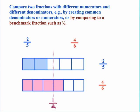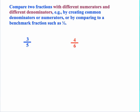We find where 1 half is, which is easier to do with 4 over 6 because there's an even number of parts. By visual inspection, we can tell that 2 fifths is less than 1 half while 4 sixths is bigger than 1 half. So subsequently, 2 fifths has to be smaller than 4 sixths.